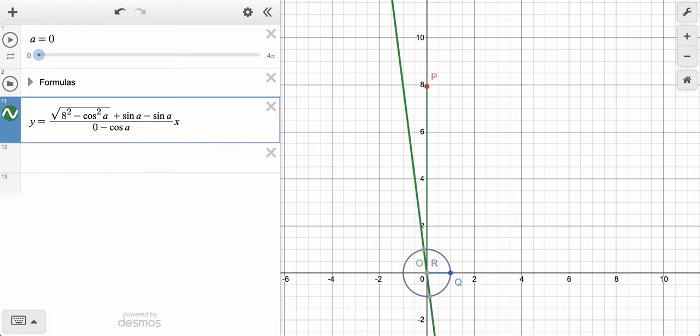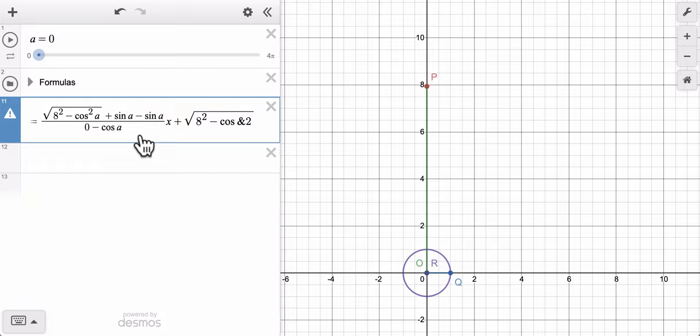So X is my input, and then I need the y-intercept for this approach. So I'm going to use plus, again, the height of P. P is the y-intercept of this line. So it's 8 squared minus the cosine squared of A plus the sine of A in my case. And there's my line.